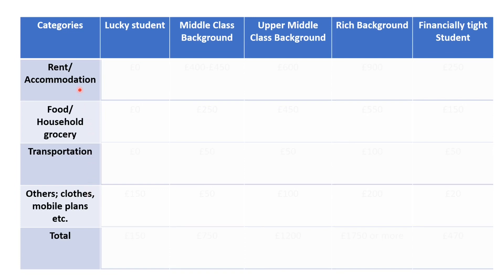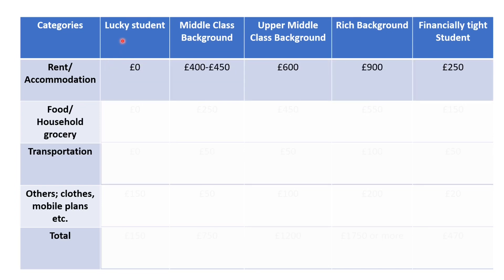First, we begin with student rent and accommodation. For a lucky student — the one who is staying with relatives or family in the UK — they don't have to pay any rent, so the figure is zero. Students from the middle class background: the average basic room is about £400 to £450 in a student accommodation. Students who come to the UK to study have a choice of staying in student accommodation or in private flats. The flat rent is quite cheap, but you won't have the same security and facilities as student accommodation. For the upper middle class background, I've included a figure of £600, meaning the rooms they opt for will have more facilities.